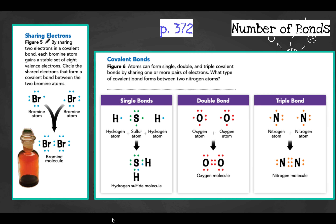On page 372, by sharing two electrons in a covalent bond, each bromine atom gains a stable set of eight valence electrons. Atoms don't always share just one pair — they can share two or even three pairs. Circle the shared electrons that form a covalent bond between the two bromine atoms; each had seven, but by sharing they each effectively reach eight.